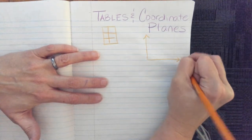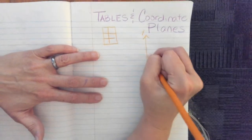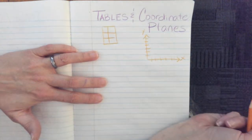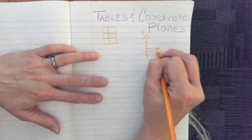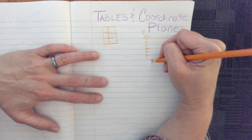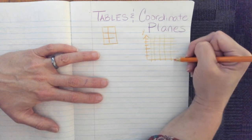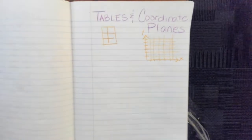with numbers in it. And a coordinate plane looks something like this, where we have an X and a Y, and then we have lines that intersect. Let me go all the way across, and then all the way up. So this is a table, this is a coordinate plane.